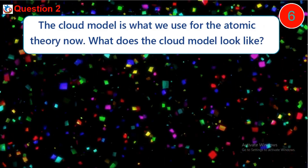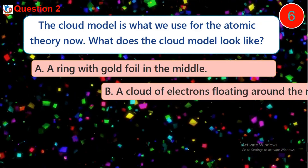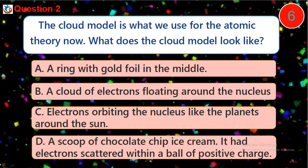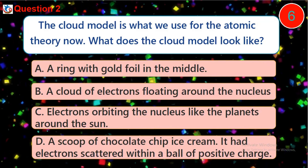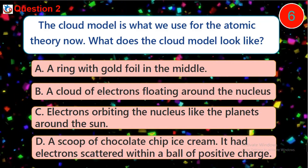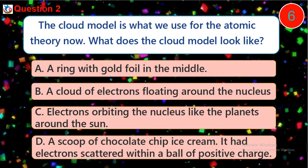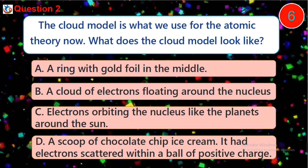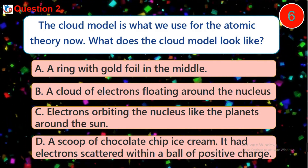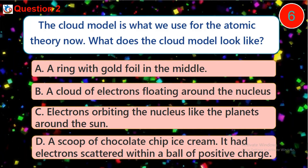Question 2. The cloud model is what we use for the atomic theory now. What does the cloud model look like? A. A ring with gold foil in the middle. B. A cloud of electrons floating around the nucleus. C. Electrons orbiting the nucleus like the planets around the sun. D. A scoop of chocolate chip ice cream / electrons scattered within a ball of positive charge.